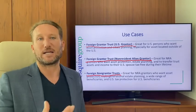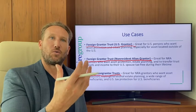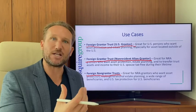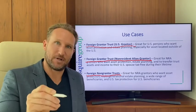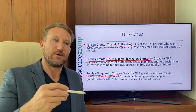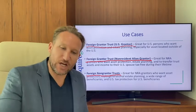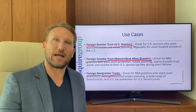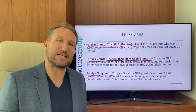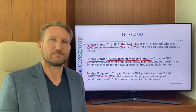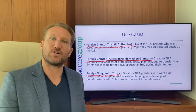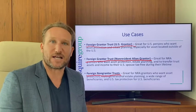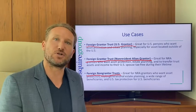What happens is the trust will always own the assets — it's never going to distribute the assets the patriarch put in — but it will distribute income generated by the trust assets for generations. The big benefit is that future beneficiaries are only going to get taxed on the distributions they receive from the trust.